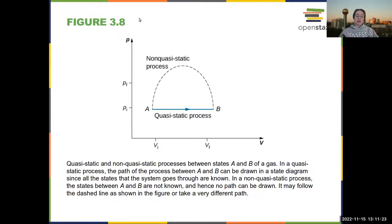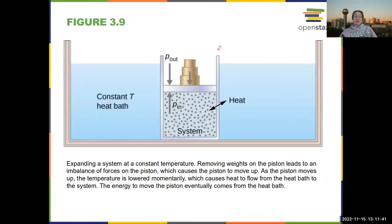So in a quasi-static process, the path is known more or less exactly. In a non-quasi-static process, which we will mostly not be dealing with, you don't know how it went from A to B, and you can't really draw a clear path. If we don't know how it got there, we can't really work with it very well.